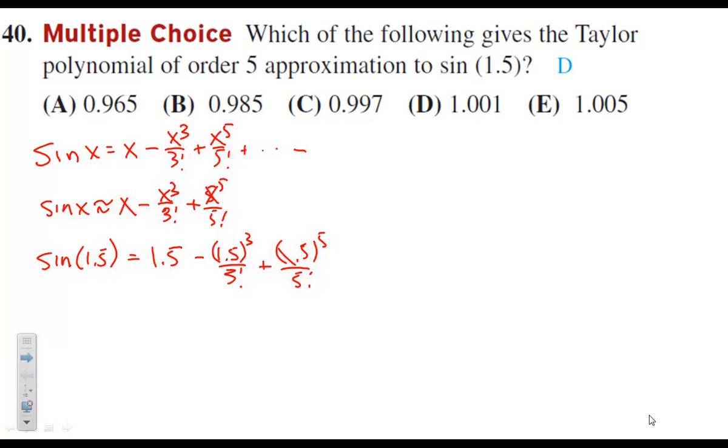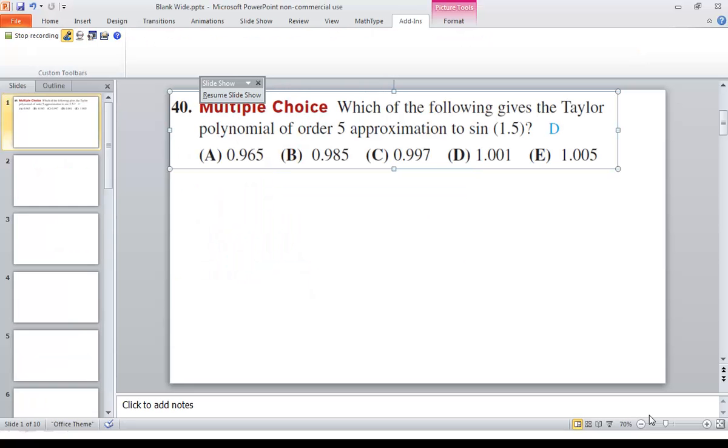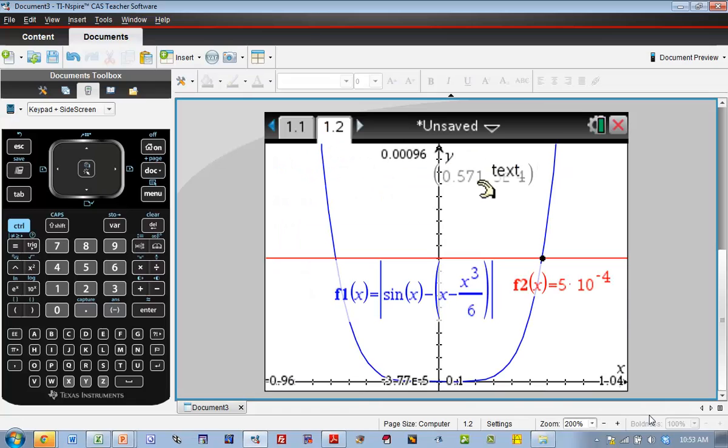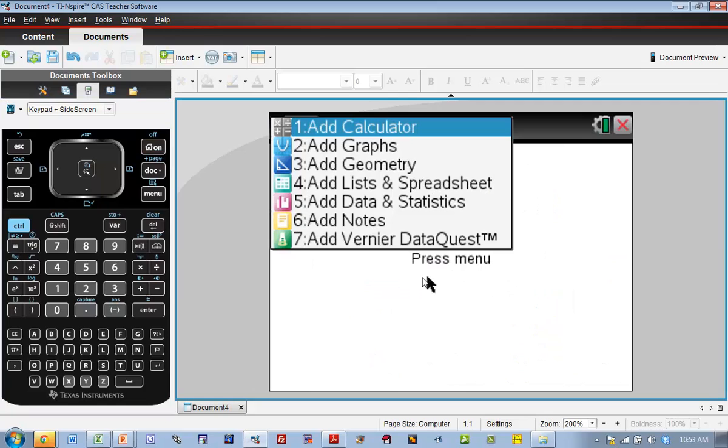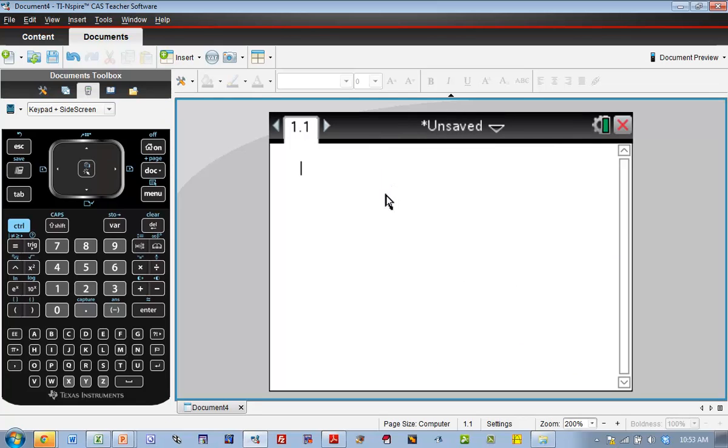That value, when we plug it into the calculator, 1.5 minus 1.5 cubed divided by 3 factorial plus 1.5 to the 5th divided by 5 factorial.